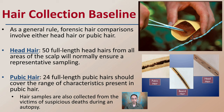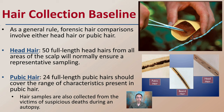When collecting hair as a baseline, forensic hair comparisons involve either head hair or pubic hair. For head hair, ideally we're looking to collect about 50 full-length head hair samples from all areas of the scalp to ensure a representative sample. For pubic hair, we're looking at about 24 full-length pubic hairs, which should cover the range of characteristics present.